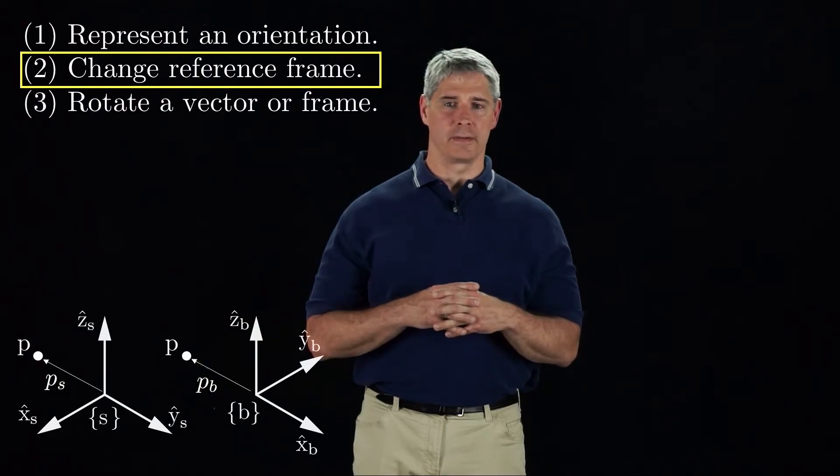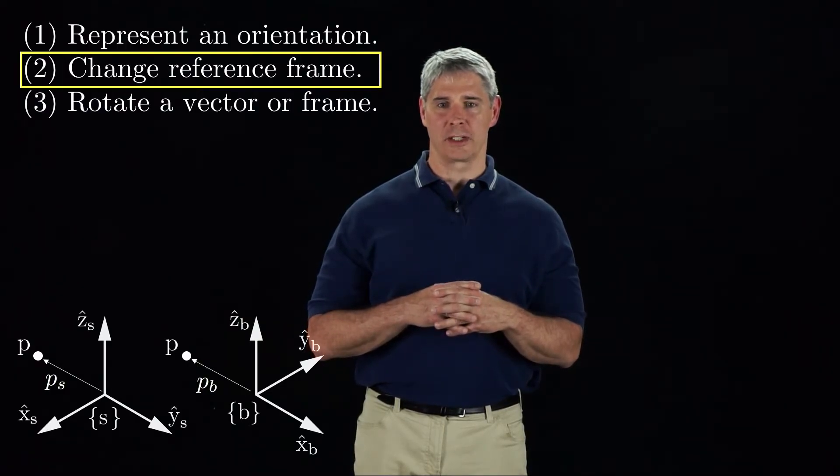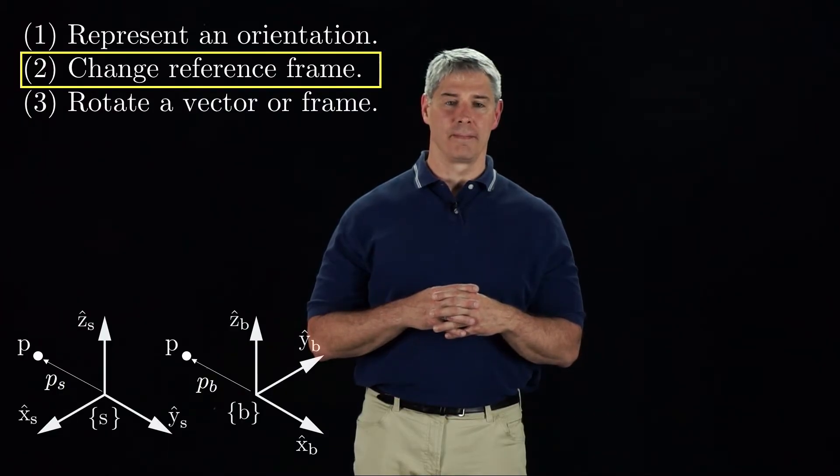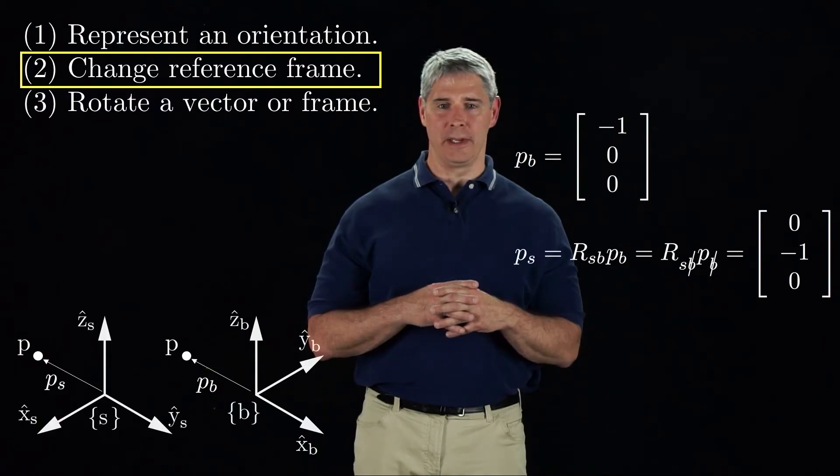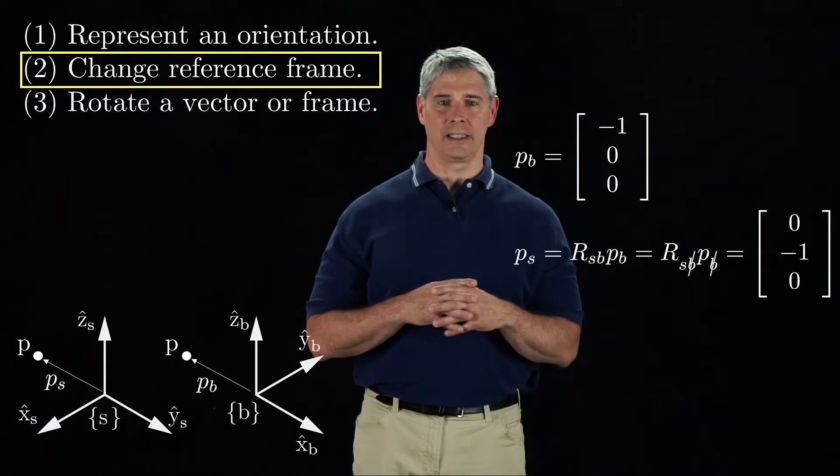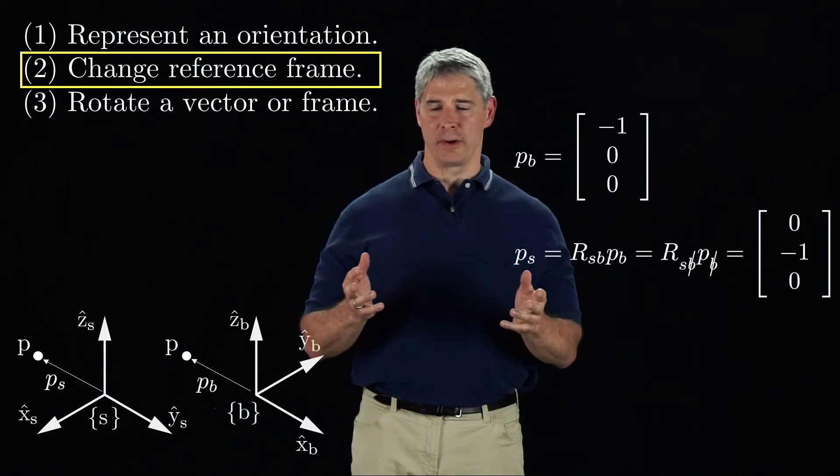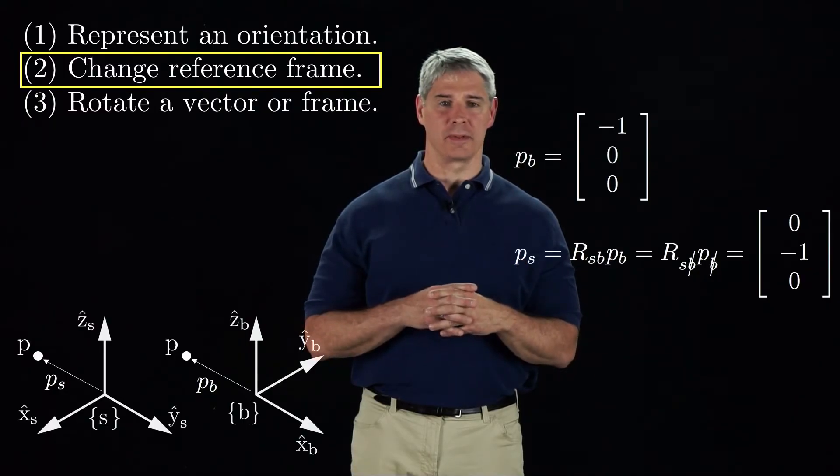We could also change the frame of reference of a vector. Let PB be the position of point P when expressed in B frame coordinates. To express P in S coordinates, we can pre-multiply PB by RSB to get PS. This operation again satisfies a subscript cancellation rule.